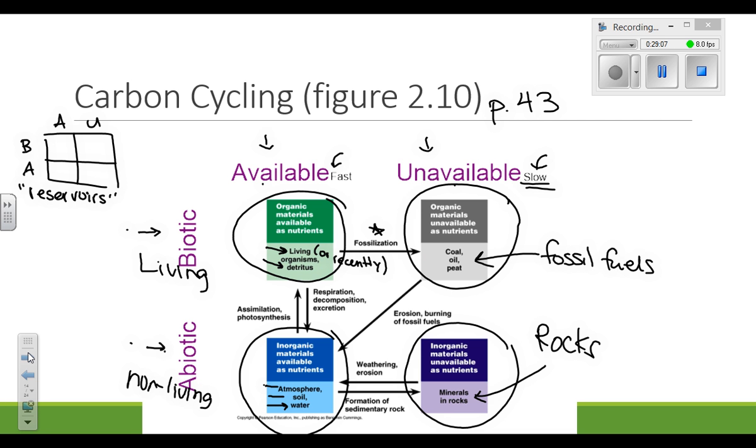Now between all of the reservoirs there are arrows and the arrows are the names of processes that happen in the carbon cycle. We will talk about a few of them specifically in the steps of the carbon cycle but for example, I already mentioned this one, to get from biotic available to biotic unavailable fossilization happens.